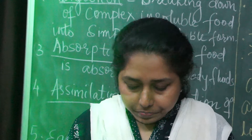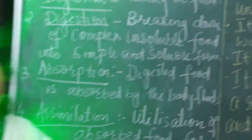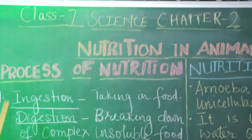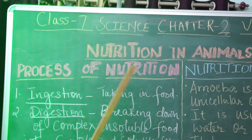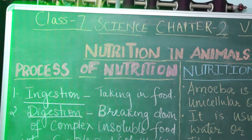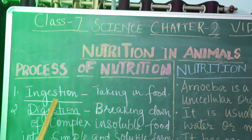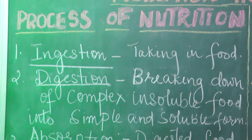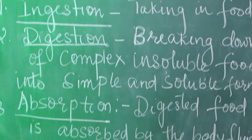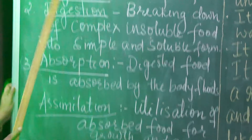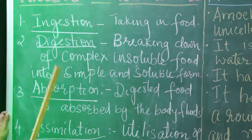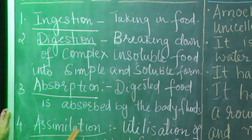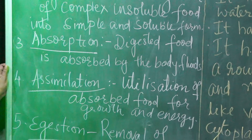Now we have to study the process of nutrition. The process of nutrition has basically 5 steps: ingestion, digestion, absorption, assimilation, and egestion. You have to learn all these steps in order only.